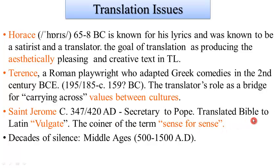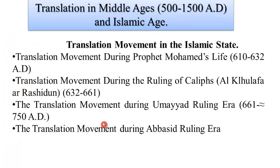Saint Jerome is still famous to this day for the term 'sense for sense' that he coined. He also translated the Bible into Latin, naming it the Vulgata. Then the Dark Ages arrived and the Roman Empire eclipsed. However, translation continued flourishing and developing, but with other peoples, witnessing different civilizations that came with the Islamic age and Islamic state.